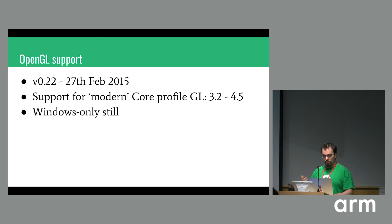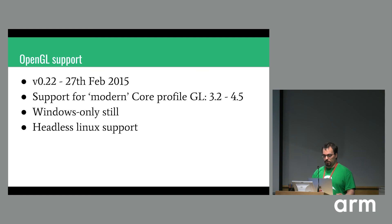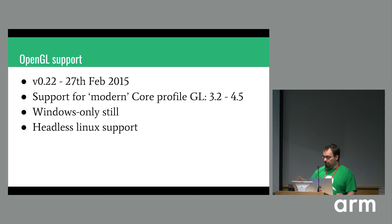OpenGL support was released about a year after the first public release, in February 2015 — support for modern OpenGL, core profile versions 3.2 to 4.5 plus a few ARB extensions. This was still primarily Windows only. There was technically Linux support, but the main blocker was that the UI was written in .NET, which wasn't going to port easily to Linux. So it was only headless Linux support — you could capture from the command line, but you'd still have to load the frame on a Windows PC with the Windows UI.